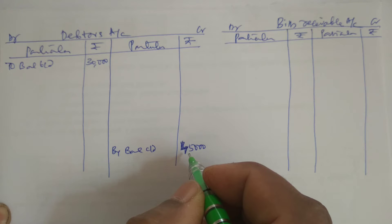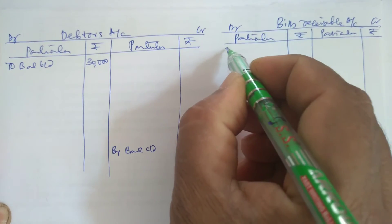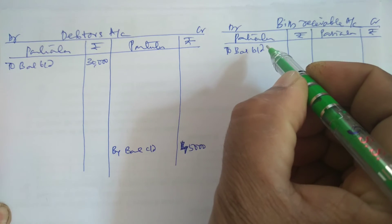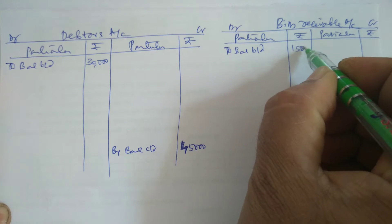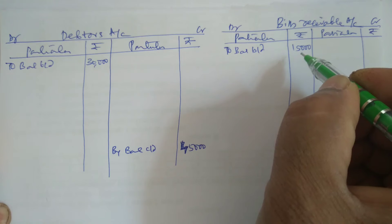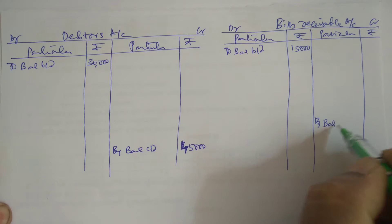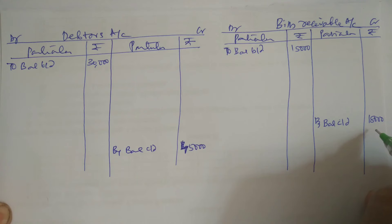Next, there is bills receivable as on 1-1-2010, which means it is the opening balance. Bills receivable is an asset to the business, so the opening balance always shows debit. Bills receivable account is Rs. 15,000. And bills receivable as on 31-12-2010 is Rs. 18,000 — it is the closing balance.